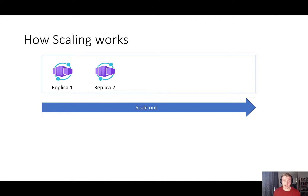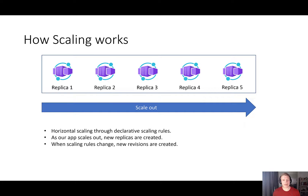In Azure Container Apps, it manages automatic horizontal scaling through a set of declarative scaling rules. As our Container App scales out, new instances of the Container App are created. These instances are known as replicas. And when we define scaling rules for our Container App, new revisions of our Container App will be created. So when we change our scaling rules for a Container App, this is known as a revision scope change.